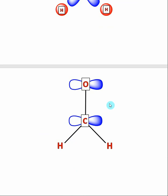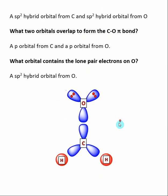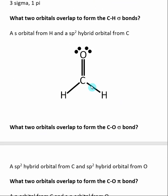What remains is the pi bond. After forming the sigma bonds, what remains is a p orbital on the carbon and a p orbital on the oxygen. These two orbitals overlap to form the C-O pi bond, and in the end, we get this molecule.